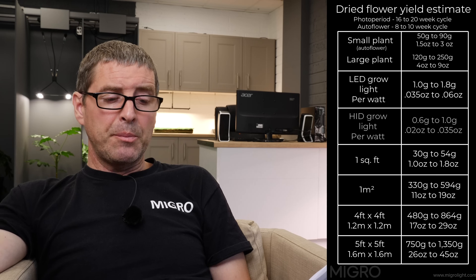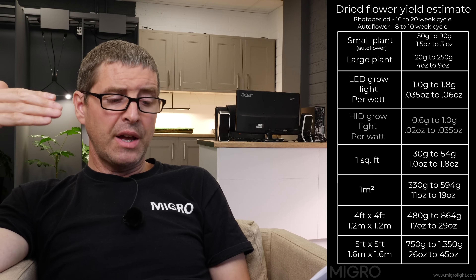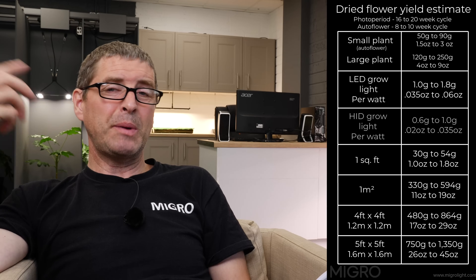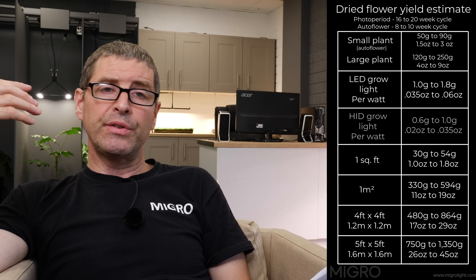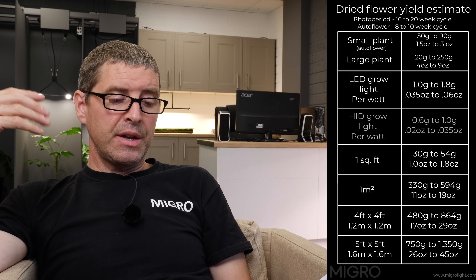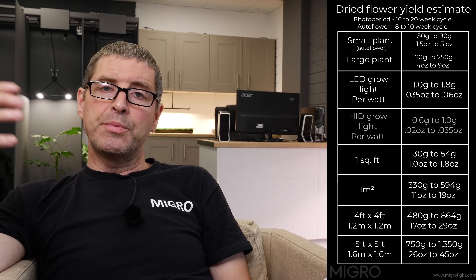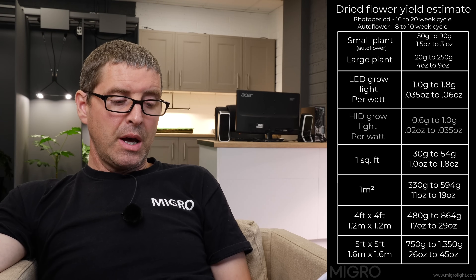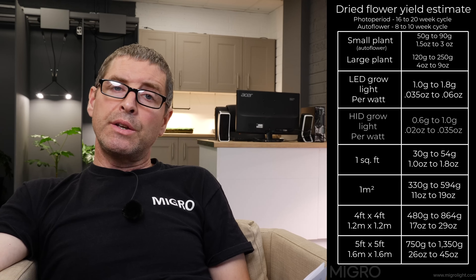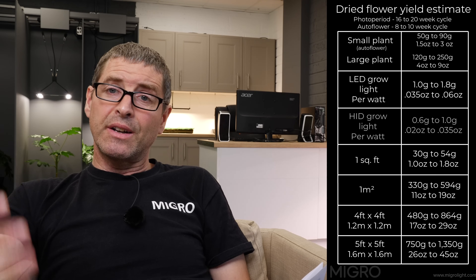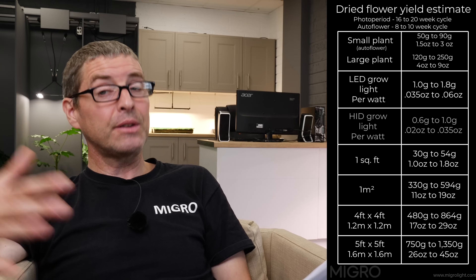In terms of LED grow lights, they got efficient and compared to the HID grow lights shown below on the table, LED grow lights are about 50% more efficient, so you'd expect about 50% more yield. That's the sort of ratios in terms of grams per watt. So with a 600 watt HPS, you'd be expecting to get 600 by 0.6 — so about 360 grams up to 600 grams from that fixture. That would depend on whether you're running autos or photos, small plants or large plants, genetics, growing medium, growing styles, environment, and all that stuff — that's why there's such a big range.